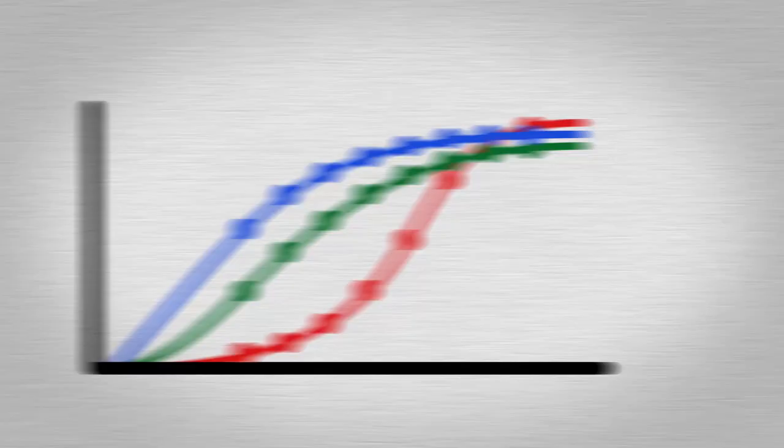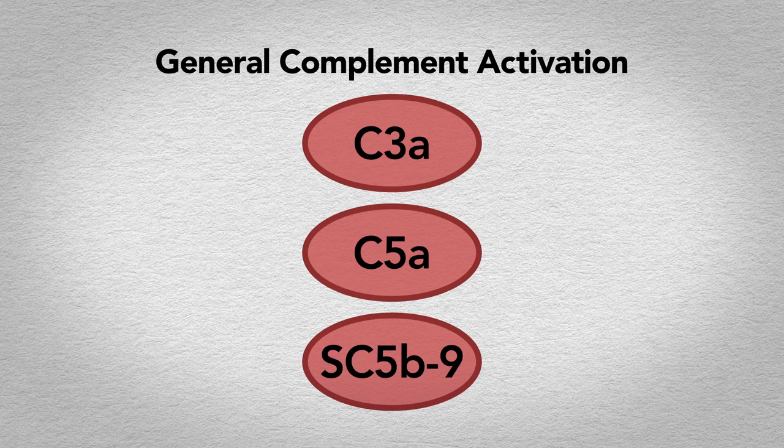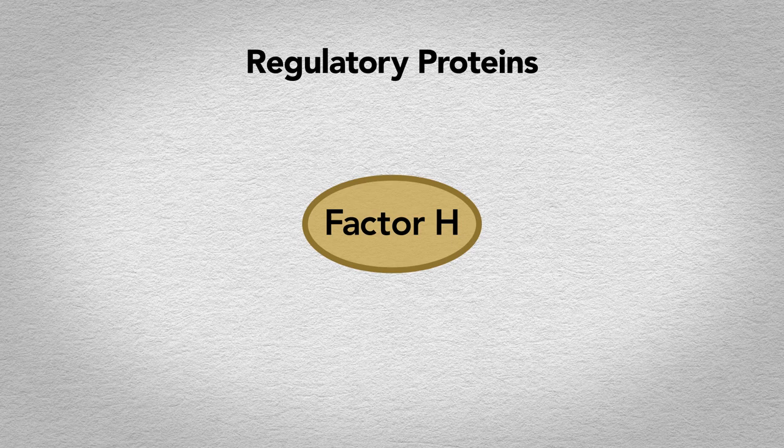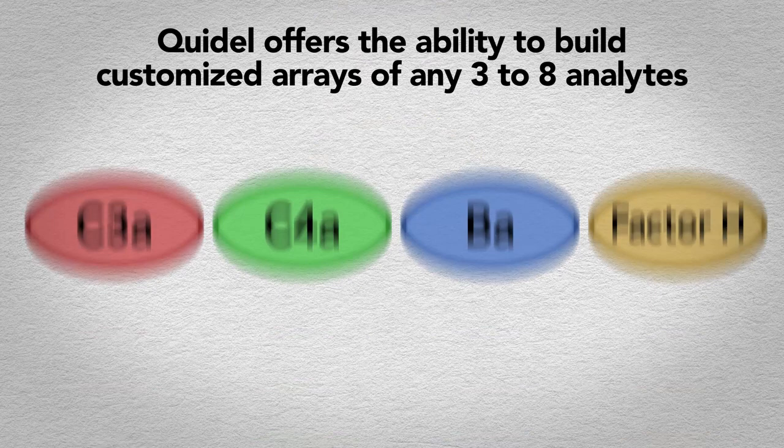The Quidel multiplex array tests for many complement analytes. C3A, C5A and SC5B9 detect general complement activation. C4A and C4D detect classical pathway activation. BA and BB detect alternative pathway activation. Factor H and factor I, two important regulatory proteins, are included as well.